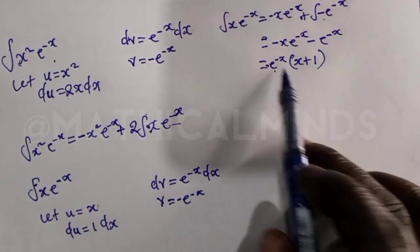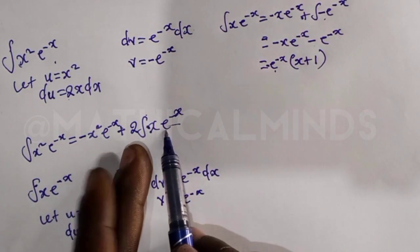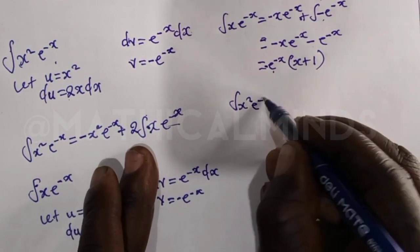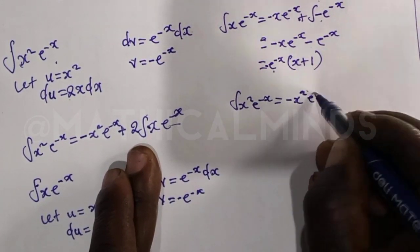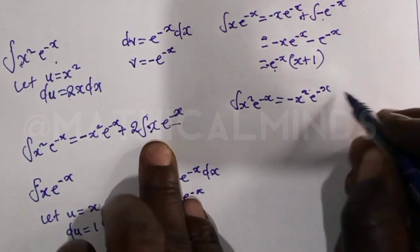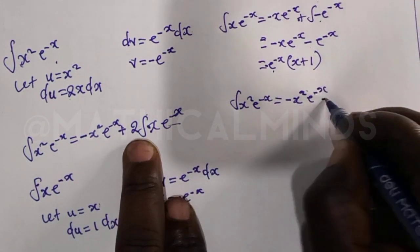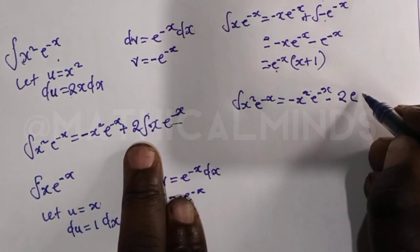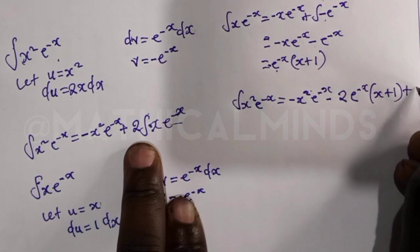Now we take this result back to the main expression. The integral of x squared e to the power minus x equals minus x squared e to the power minus x, minus 2 times the result we just found. So it equals minus x squared e to the power minus x minus 2 times negative e to the power minus x times open bracket x plus 1, plus constant C.